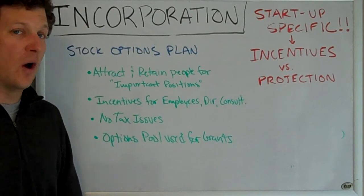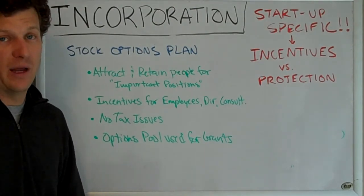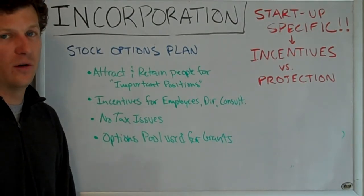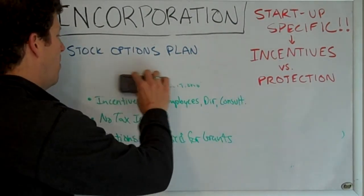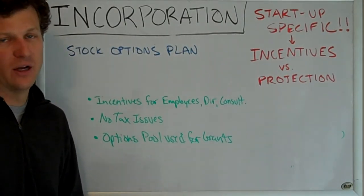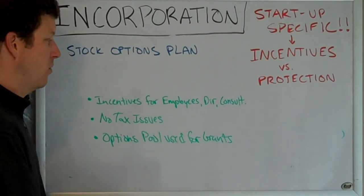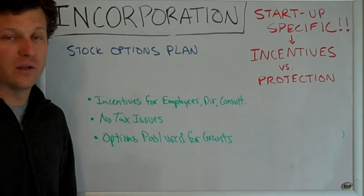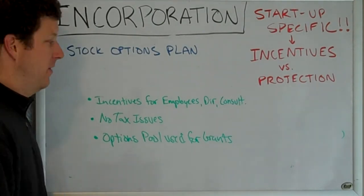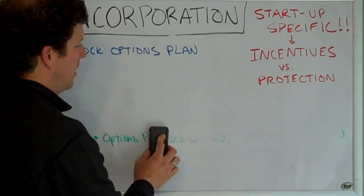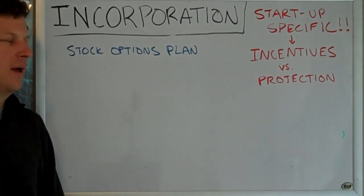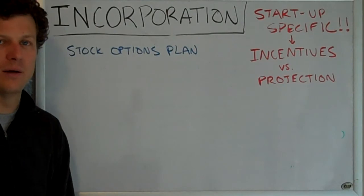Another bad outcome is if you don't create an options pool and have no equity incentive plan — good employees will say they're not going to work for a company where they have no ownership or equity, so you lose the opportunity to recruit good people. Also, without an options plan, you always have to pay directors or consultants in cash, which is inflexible, especially early on. You want some flexibility in how you compensate those folks, and if they're helping you early out of goodwill, you want them to have some upside in the company's success.